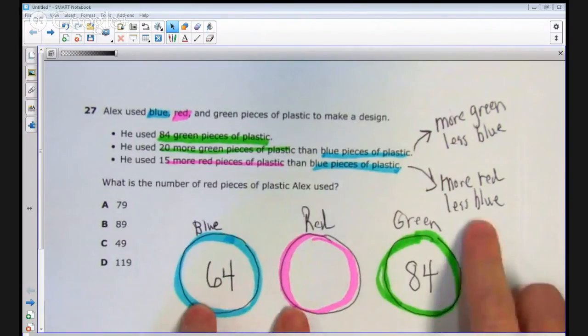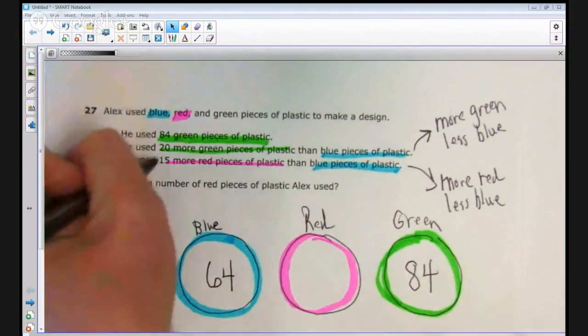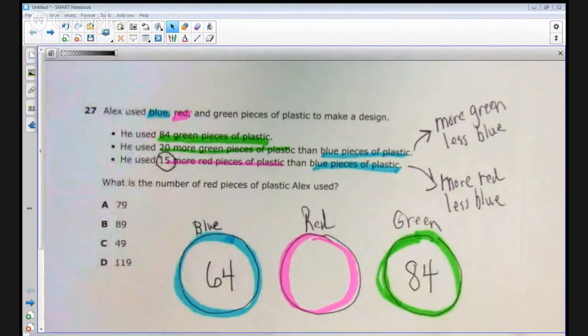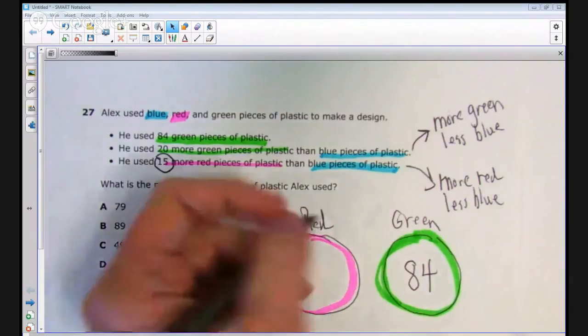Now, we need to have more red and less blue. So, whatever the number is inside the red circle needs to be bigger than the number inside the blue circle. How much more? Well, right here, 15 more. So, this number needs to be 15 more. Well, let's see, if I add 15 more, that means I'm going to add a 10 to the 60, make it a 70, and I'm going to add a 5 to the 1 and make it a 9. So, I should have a 79 here.